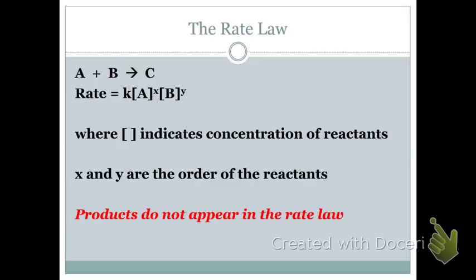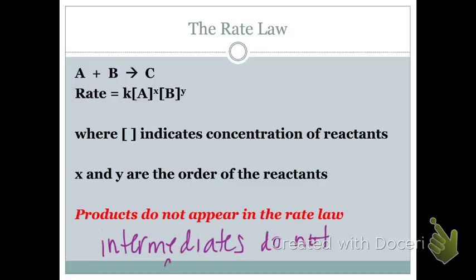Notice that products do not appear in the rate law. Also, intermediates — which we'll learn about later in mechanisms — do not appear. Catalysts typically don't appear either; it's very rare, and at this level of chemistry, we're never going to include them.